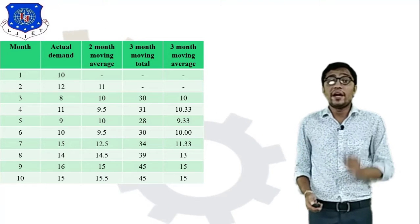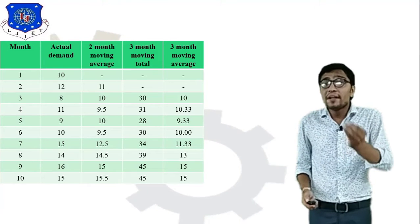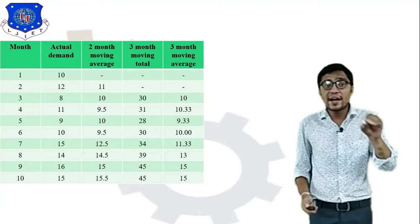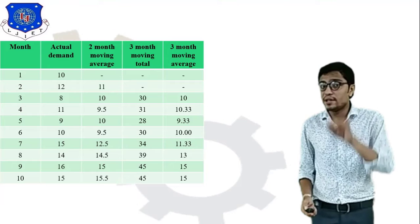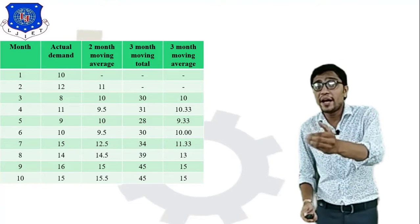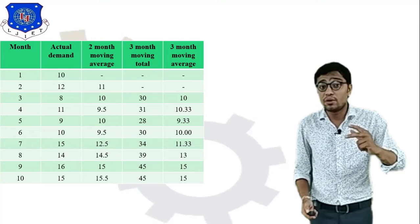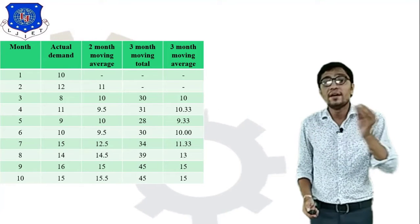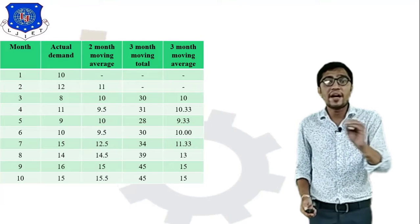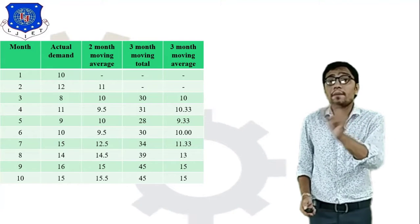So in month 3, the two-month moving average is 10. For month 4, take months 3 and 4: quantities are 8 and 11. So 11 + 8 = 19, divided by 2 = 9.5. Continuing up to month 10: take months 9 and 10 — quantities are 16 and 15. So 16 + 15 = 31, divided by 2 = 15.5, placed in month 10.